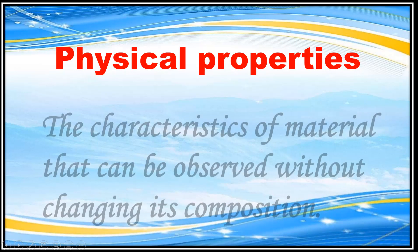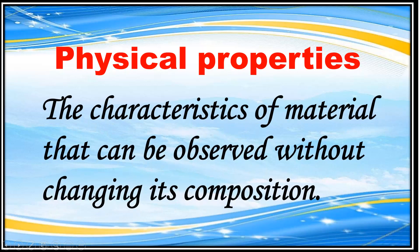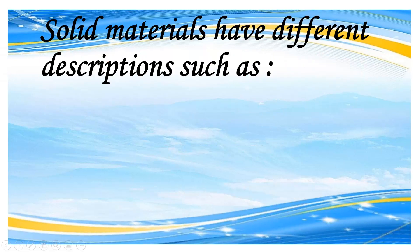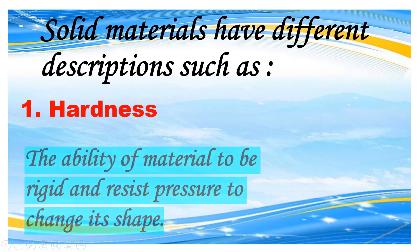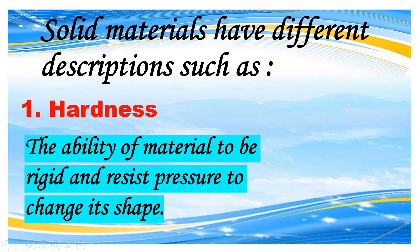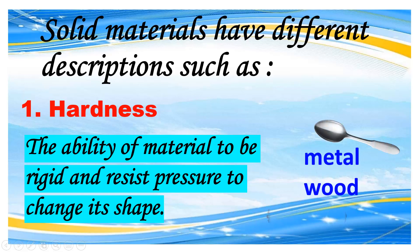Physical properties are the characteristics of a material that can be observed without changing its composition. Solid materials have different descriptions, such as hardness — this is the ability of material to be rigid and resist pressure to change its shape, like metal and wood.